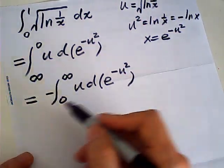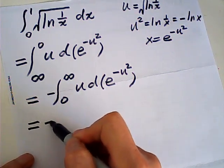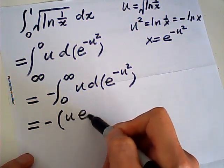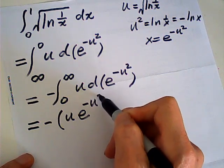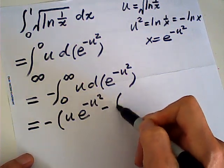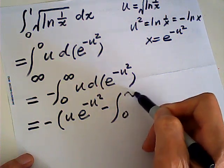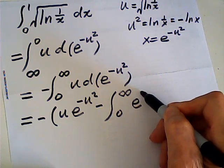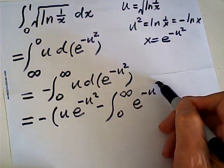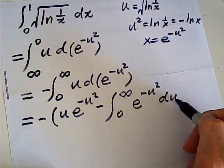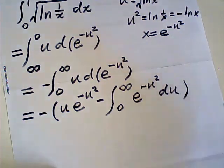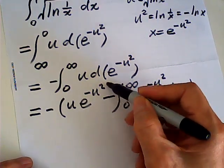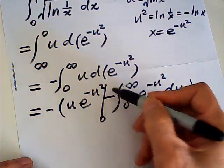Then I have by parts. This is u, this is v - u times v, which is u times e to the negative u squared, minus the integral from 0 to infinity of v du. And this is from 0 to infinity.